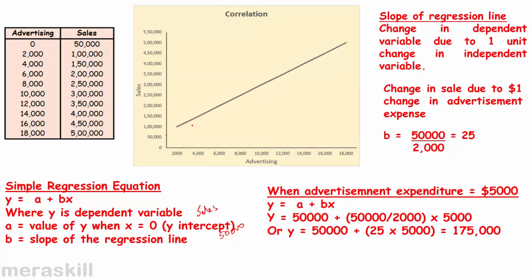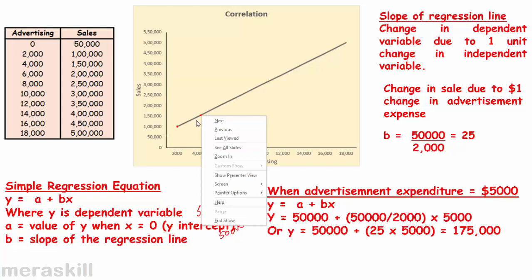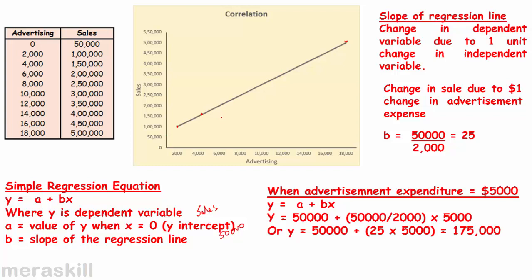This is how you plot the points. For example, at $2,000 advertising and $100,000 sales, we plot a point. At $4,000 advertising and $150,000 sales, we plot another point. At $18,000 advertising, sales would be $500,000 — we plot that point too. These points are plotted and a line is drawn to join them. This works out perfectly because the slope is exactly 1 in this simplified case.